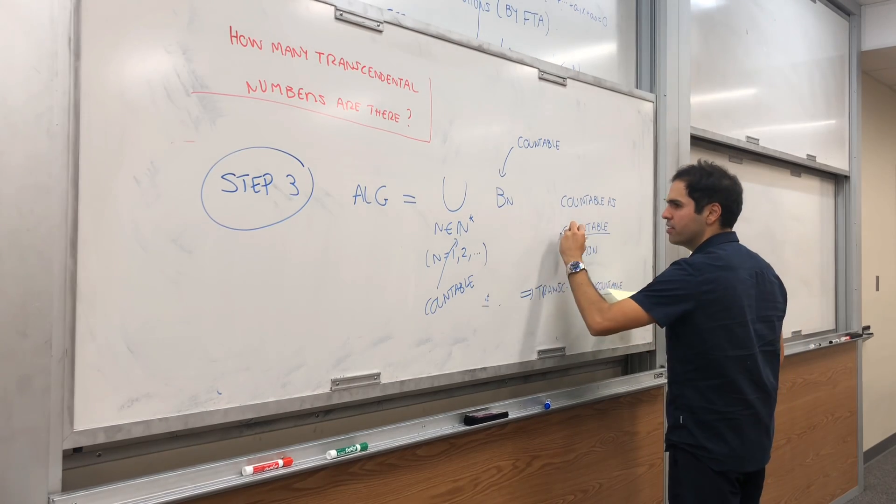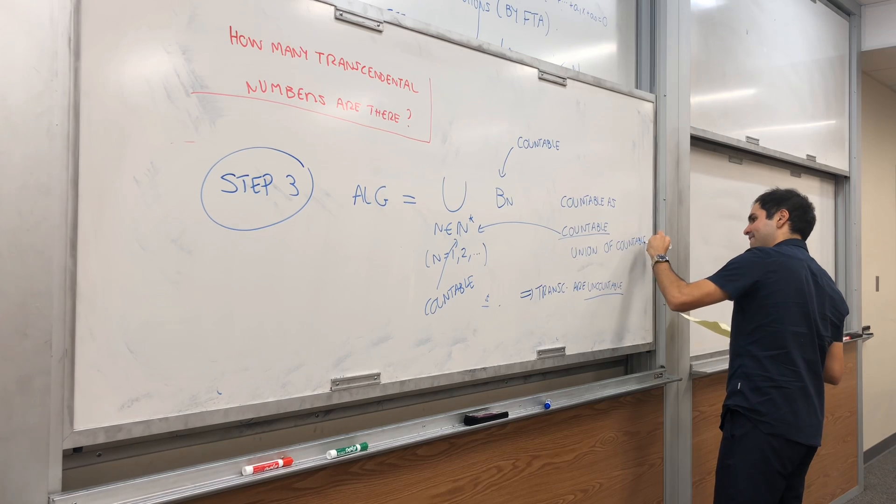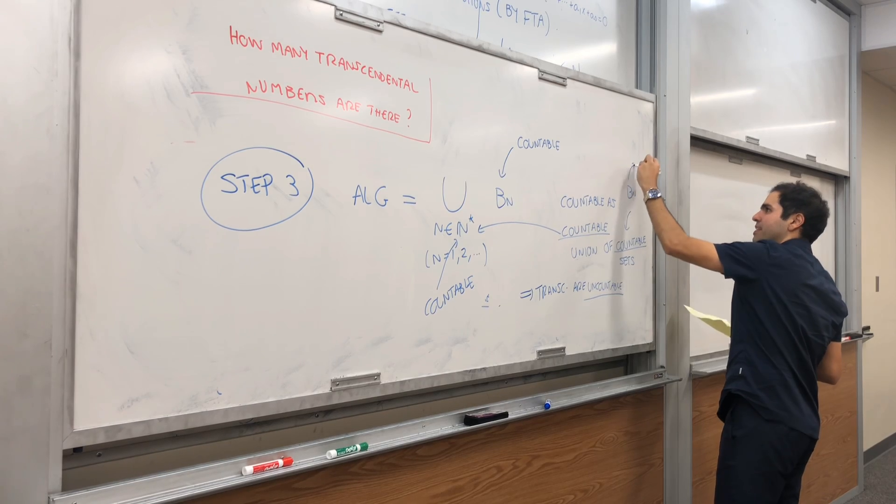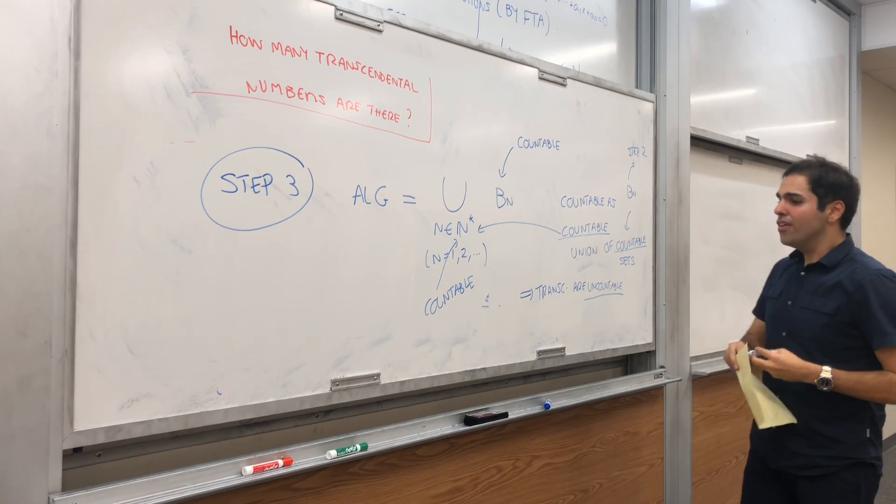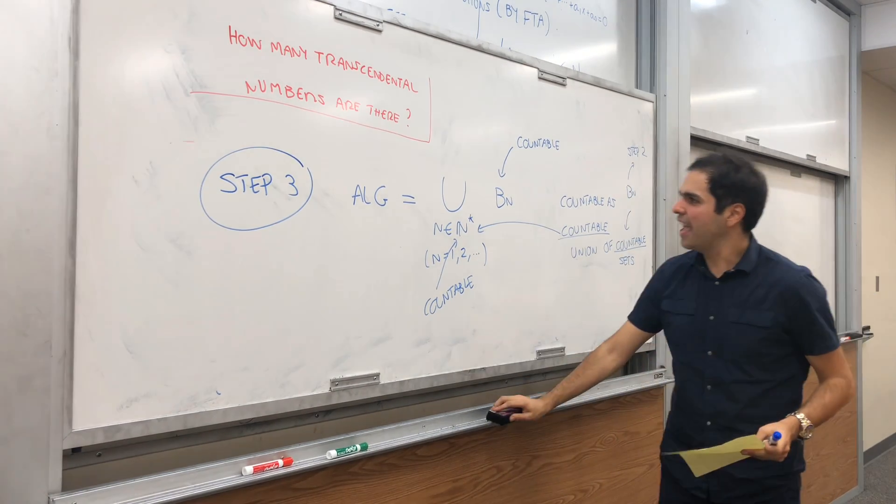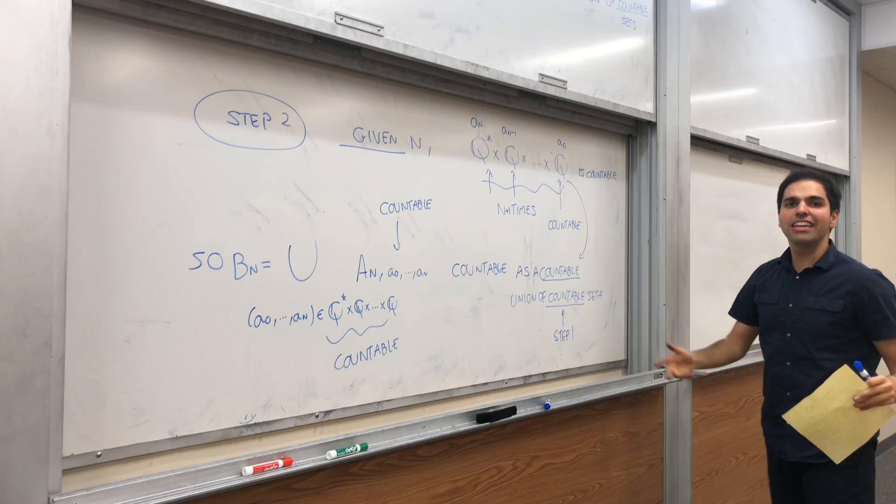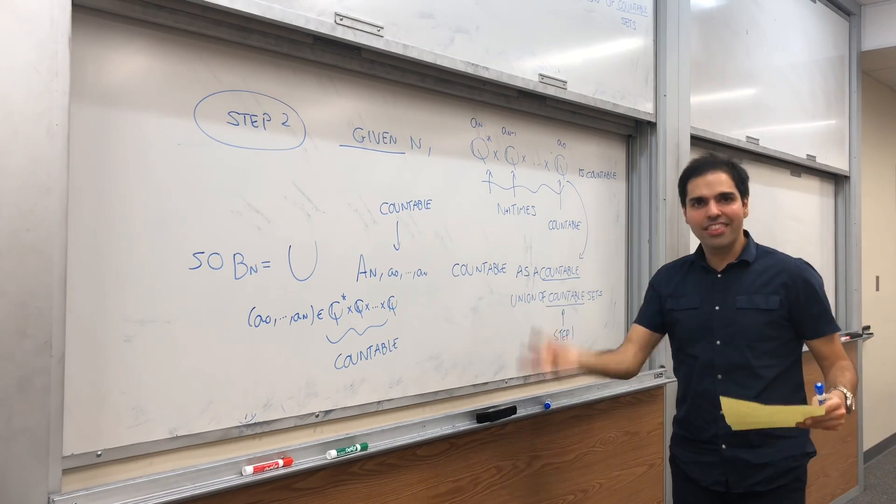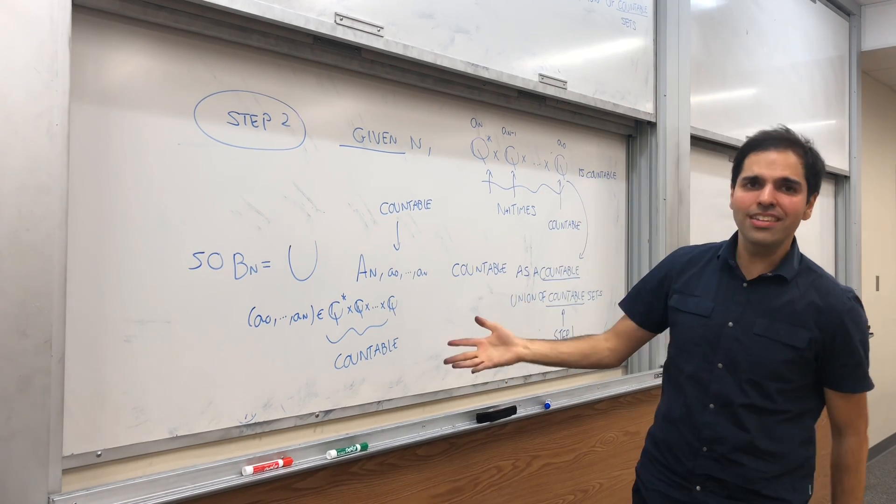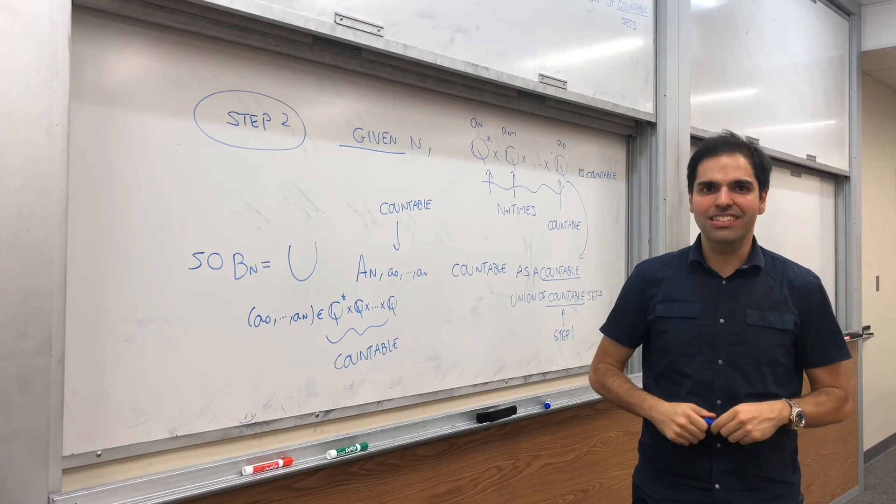So the set of algebraic numbers is countable essentially because it's the countable union of finite sets by this fundamental theorem of algebra. So in theory, you can just count all the algebraic numbers. And in particular, the transcendental numbers is the complement. So because you cannot count the real numbers, you cannot count the transcendental numbers.